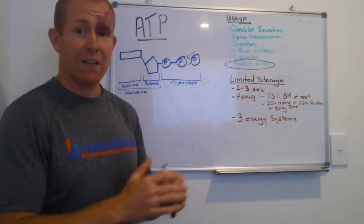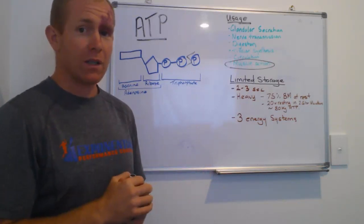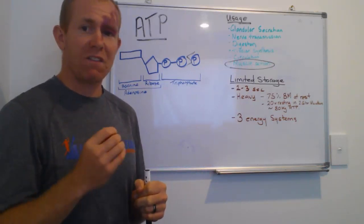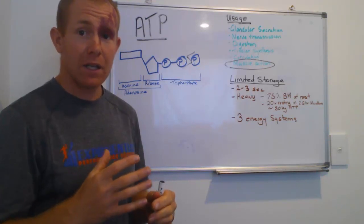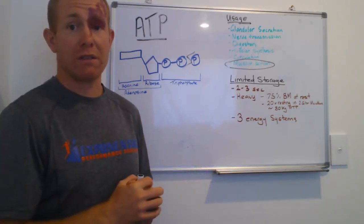So to make the maths really easy, if you were 100 kilos, you would require 75 kilograms of ATP just to be a sedentary day.